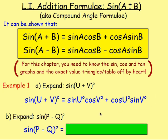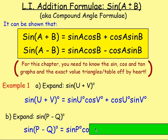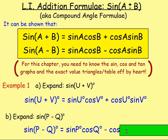Example one, part B: expand sine P minus Q. For this one, it's going to be sine of something minus something, so you're looking at the bottom formula. A and B are replaced with P and Q. So we'll have sine P cos Q minus cos P sine Q. And that's how you'd expand that one.